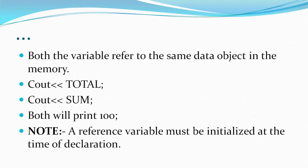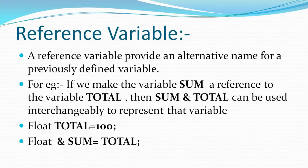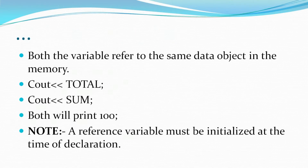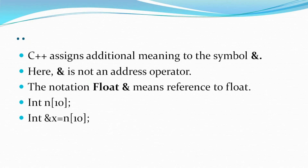If we print cout << total and cout << sum, both will print the value 100. A pro tip to keep in mind: a reference variable must be initialized at the time of declaration. When we define float &sum, we must immediately assign it to a variable — we need to initialize it at the time of its declaration.